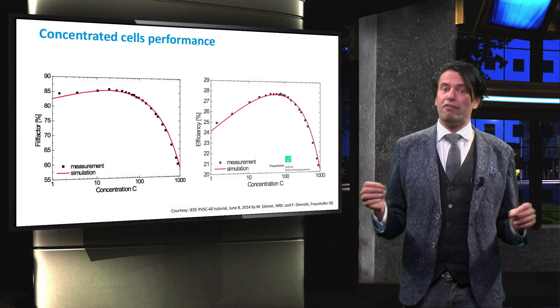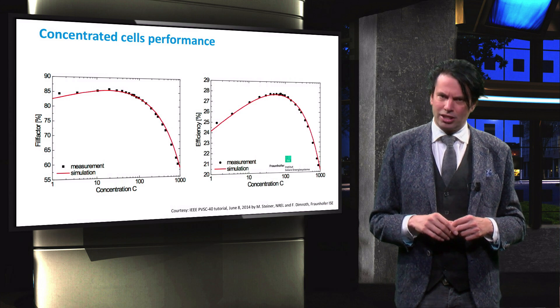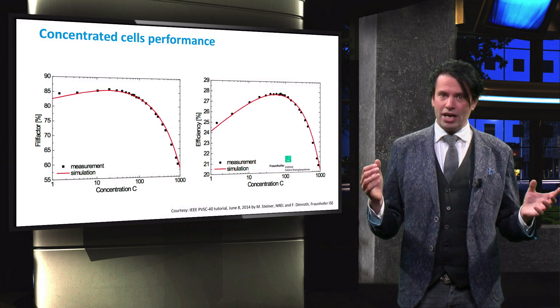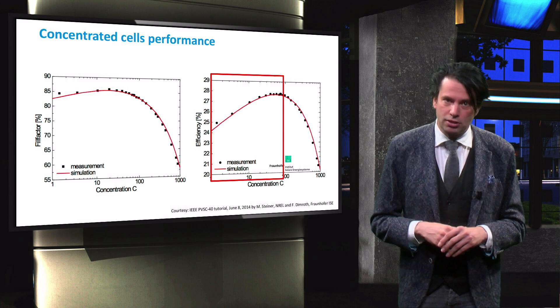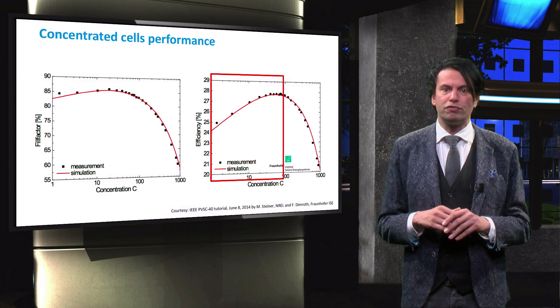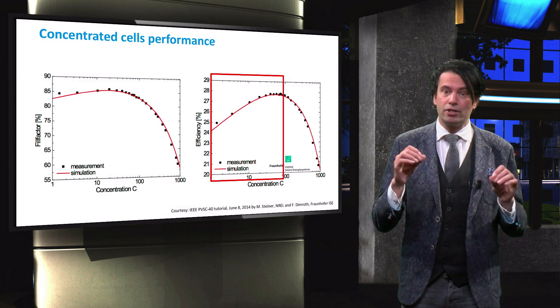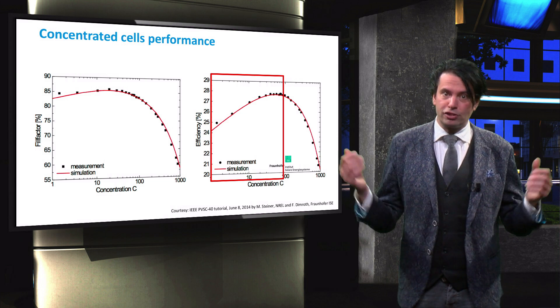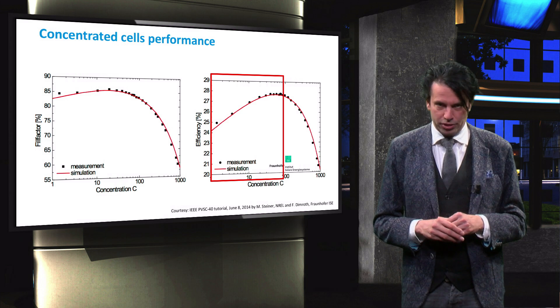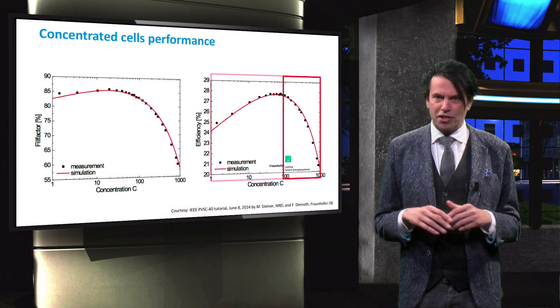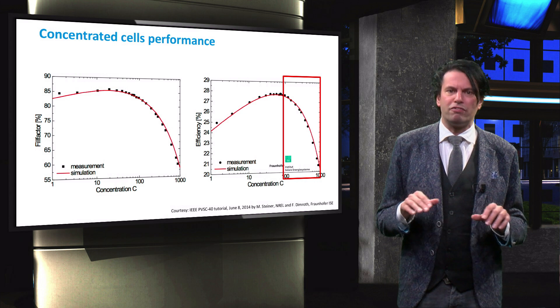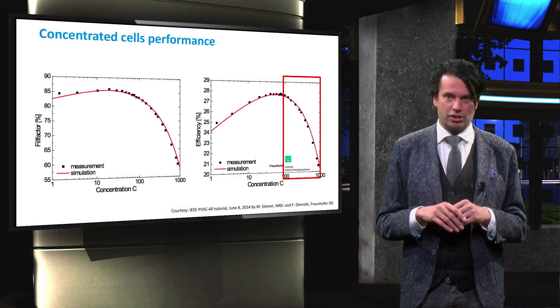As a result, the efficiency of this solar cell has a clearly defined maximum concentration level. For light concentrations up to 100 suns, the linear increase of the JSC and logarithmic increase of the VOC with increasing light concentration cause the efficiency of the solar cell to increase. At around a concentration of 100 suns, the fill factor is no longer stable and the solar cell efficiency starts to decrease significantly.